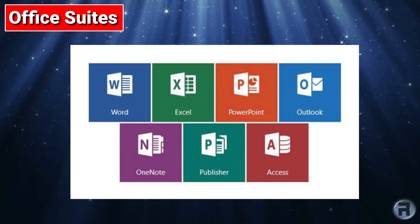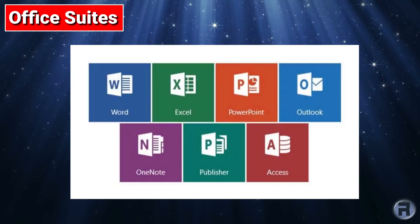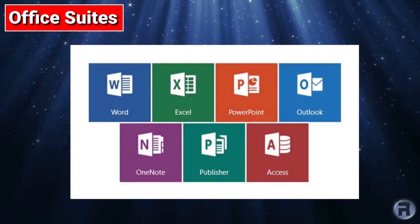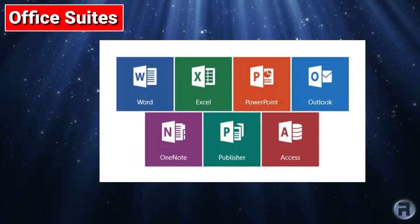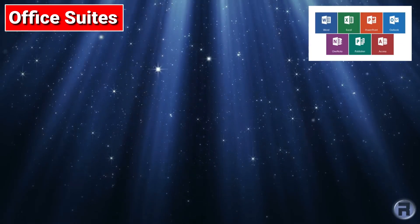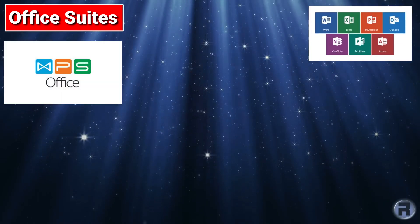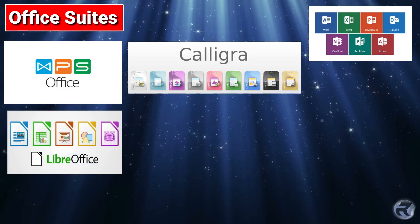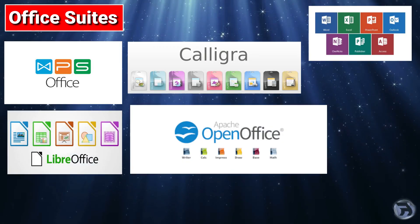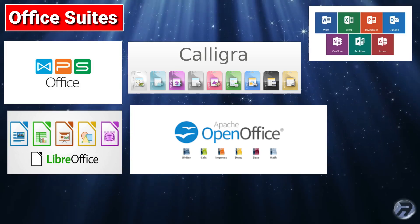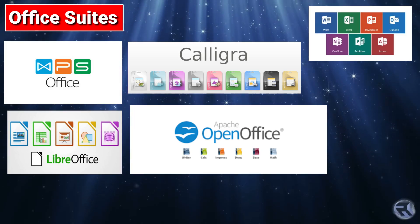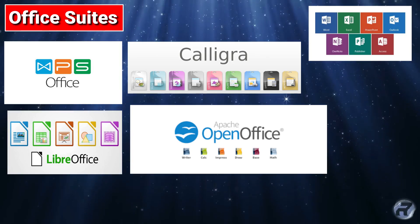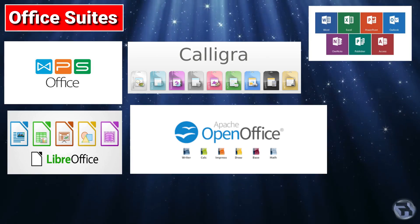So what is available for FreeBSD in terms of office suites? You might think that Microsoft Office is something that's not available — it is and it isn't, and we'll have a look at that later. What is available for FreeBSD is WPS Office, LibreOffice, Calligra Office, and OpenOffice. Each one of these office suites have their strengths and weaknesses, and it's really down to personal taste and preference which one you want to use.